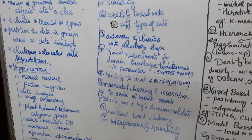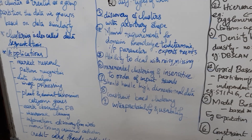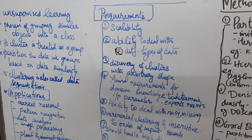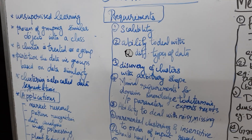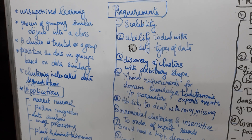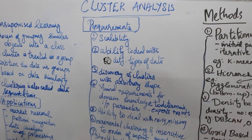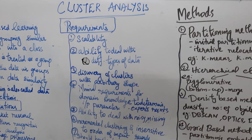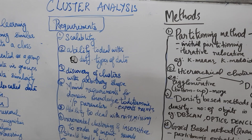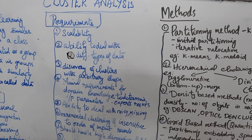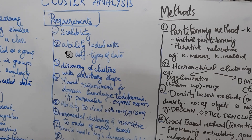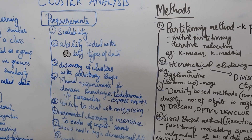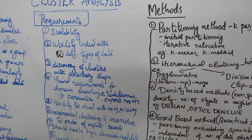Credit card fraud detection is an example for outlier detection — identifying who all are defaulters in credit card payment. Then certain requirements are needed for cluster analysis. The first requirement is scalability, meaning the clustering should be able to deal with both small databases and also large databases.